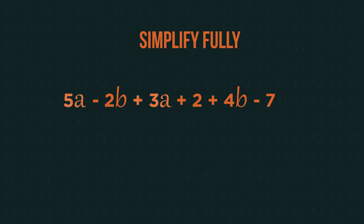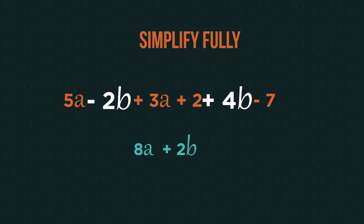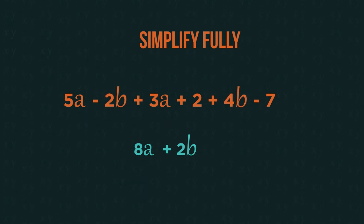So we can combine the a's to get 8a. Then the b's, including the sign in front of each term, to get positive 2b. And finally, the numbers to get negative 5.